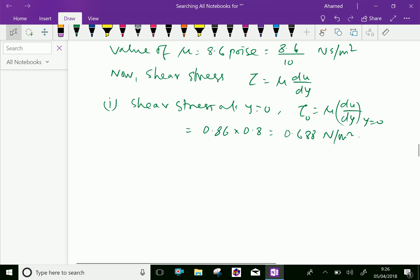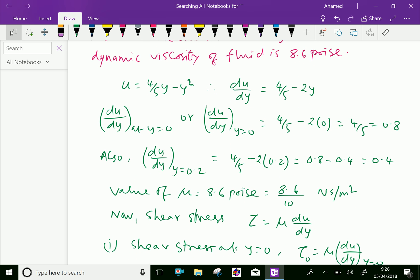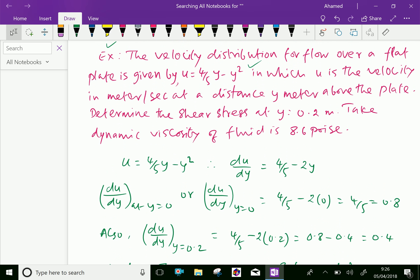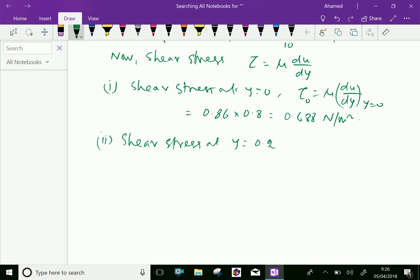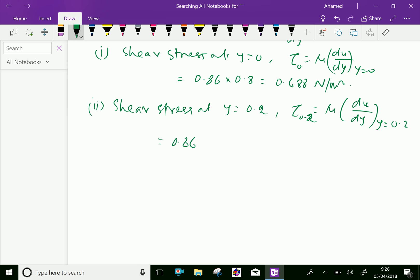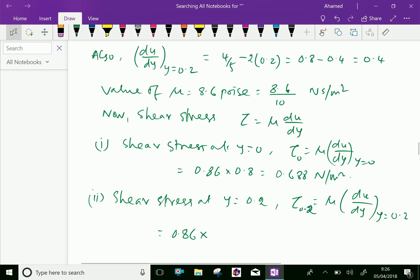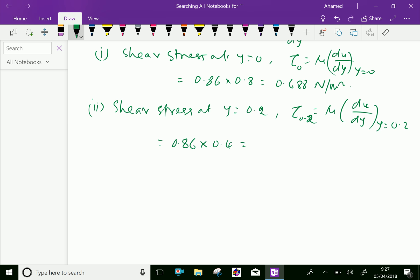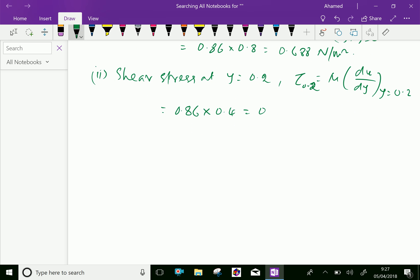Second, shear stress at y = 0.2 equals μ times du/dy at y = 0.2, which gives 0.86 times 0.4, which equals 0.344 Newton per meter square.